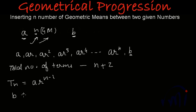So this b will be actually equal to a multiplied by r to the power n plus 2 minus 1. And from here we will get b is equal to ar to the power n plus 1.